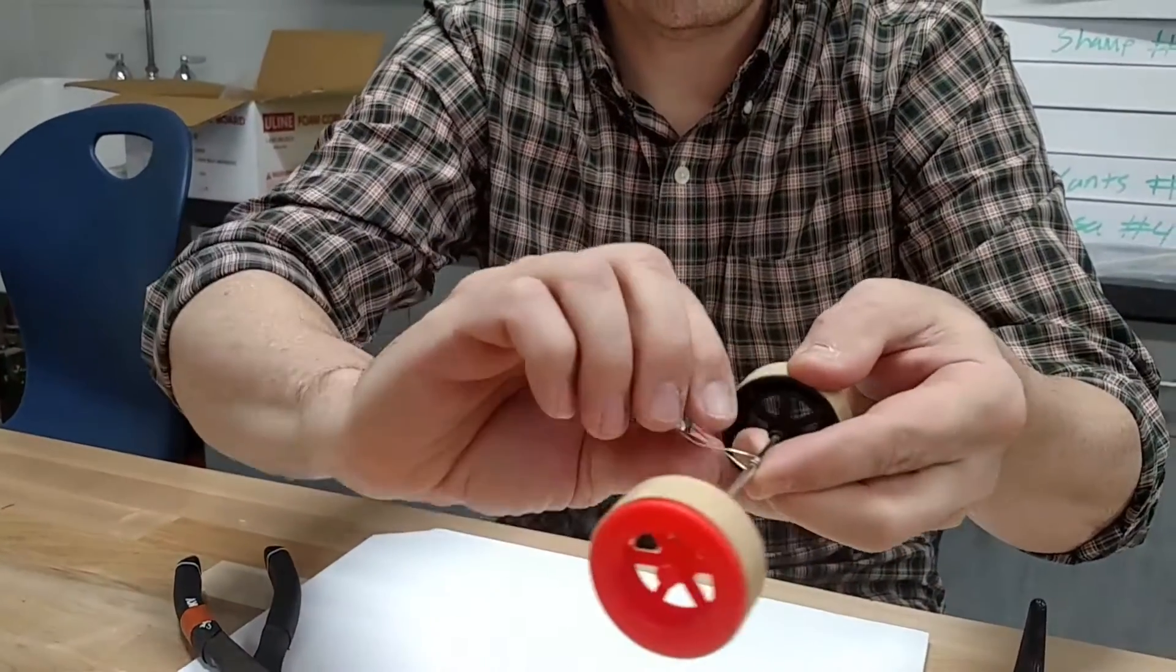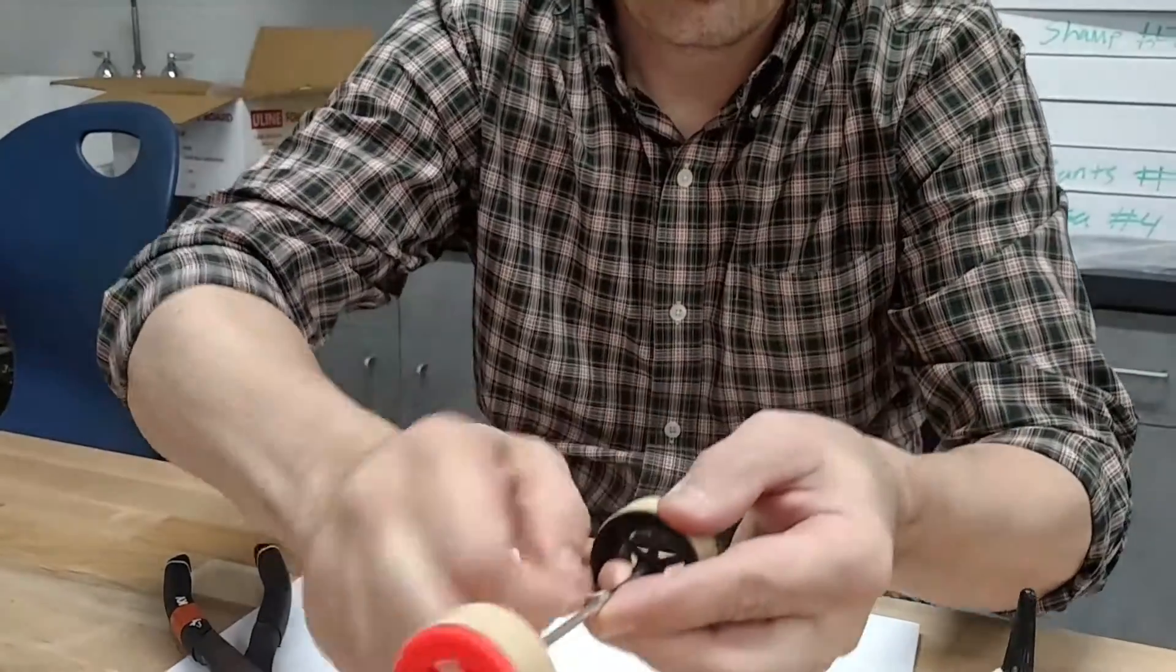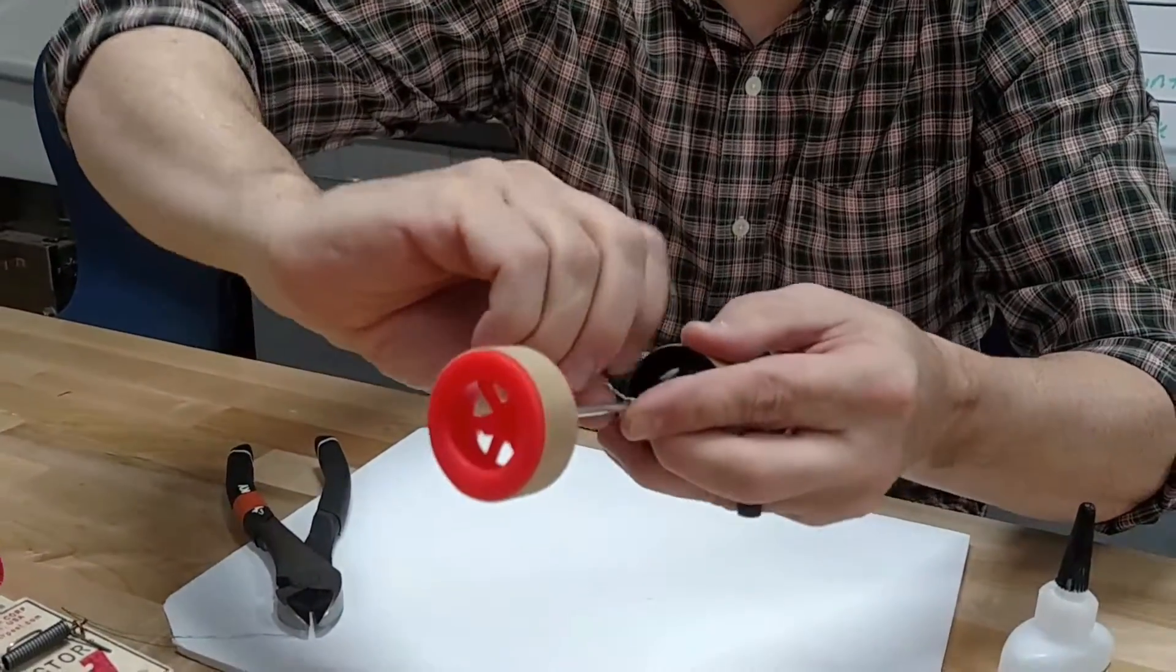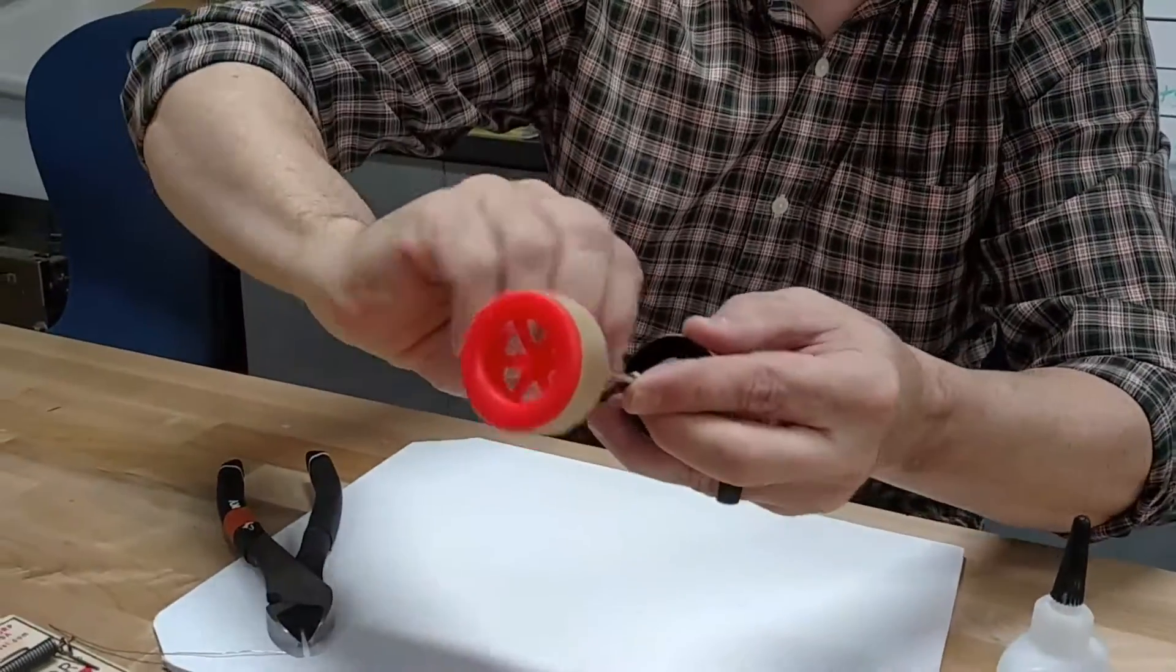Now, I need to twist this on here like a twist tie. But I want it to be kind of tight. So as I twist it, I can do this. Or I can grab a pair of pliers.